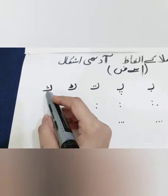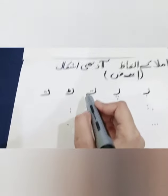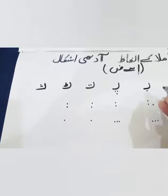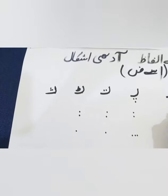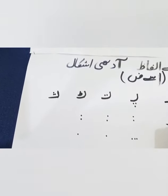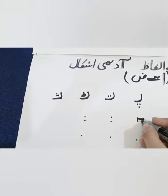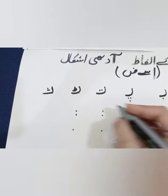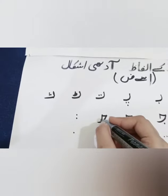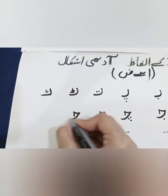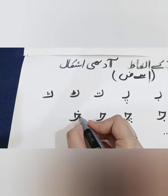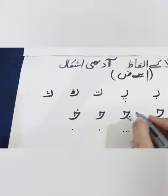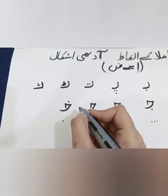یہ ہے سے کی آدھی اشکال۔ بے، پے، تے، ٹے، سے۔ اس کے بعد ہم بنائیں گے جیم کی آدھی اشکال: جیم، جیم کے نیچے ایک نقطہ۔ چے، چے کے نیچے تین نقطے، یہ ہے چے کی آدھی اشکال۔ ہے، ہے خالی۔ خے، خے کے اوپر ایک نقطہ۔ جیم، چے، ہے، خے۔ پیارے بچوں جس طرح میں بنا رہی ہوں اسی طرح آپ لوگ بھی اپنی 3-in-1 کاپی میں بنائیے اور اچھے سے پریکٹس کریے۔ (Half-forms continued: Se, Jeem - one dot below, Che - three dots below, He - empty, Khe - one dot above. Practice in copy.)